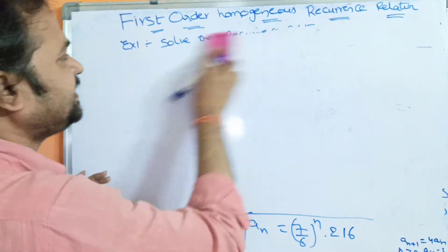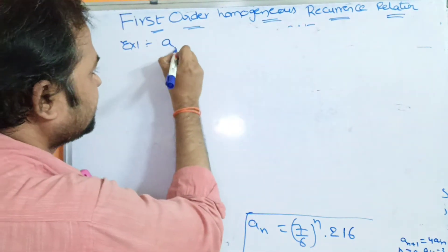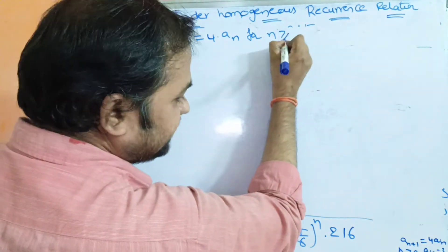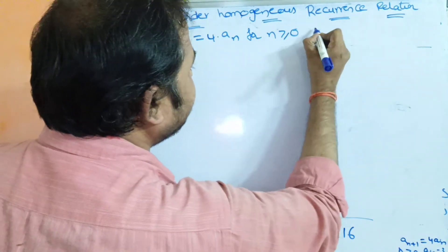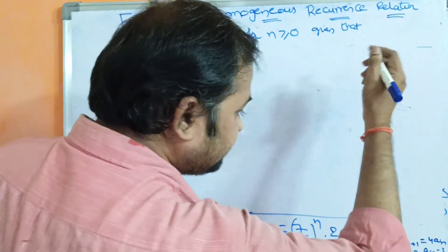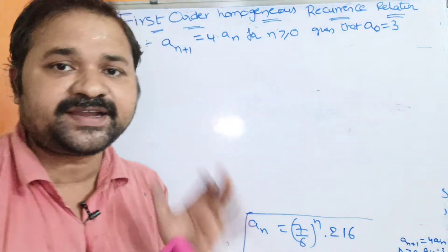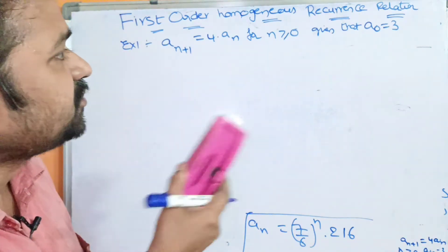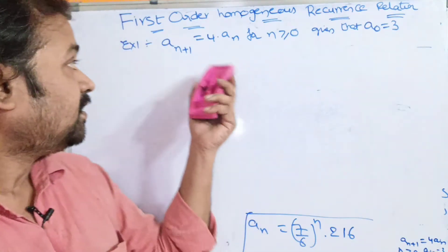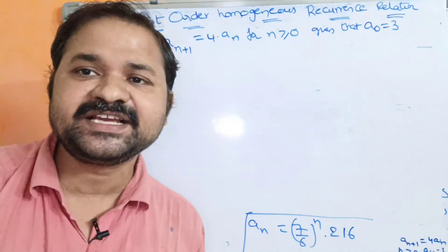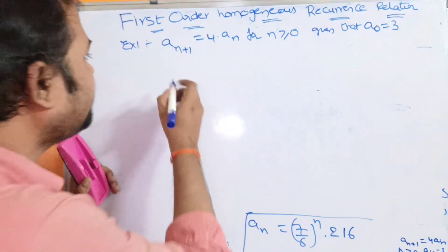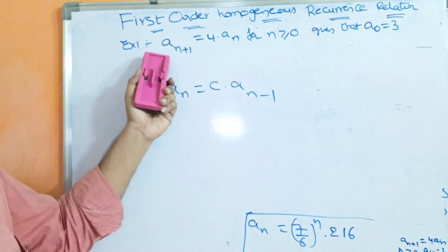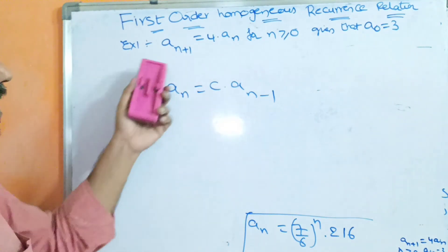Let us solve one more problem. Solve the recurrence relation AN+1 = 4·AN for N greater than or equal to 0, given that A0 = 3. We know the first-order homogeneous recurrence relation is of the form AN = C·AN−1, but here we have AN+1 and AN.